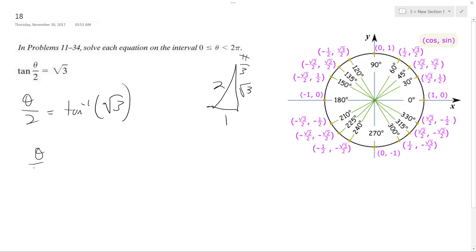So theta over 2 is equal to π over 3. Times 2, theta is equal to 2π over 3, meaning the half angle of 2π over 3 is π over 3, and that's how we get root 3.